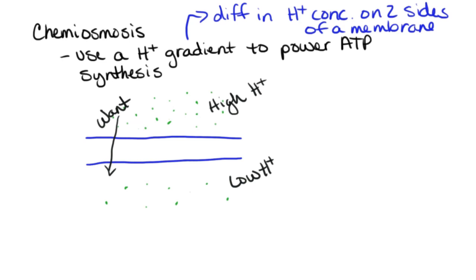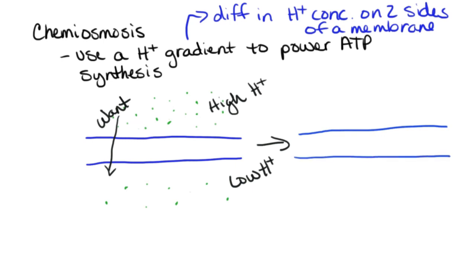With chemiosmosis, we're going to harness this desire of the hydrogen ions to want to move down their concentration gradient, and we're going to use that to power ATP synthesis. We have a high concentration on top and less on the bottom, so there is a difference in the hydrogen ion concentrations, and the hydrogens want to move to the bottom — down their concentration gradient.